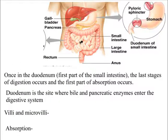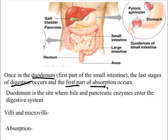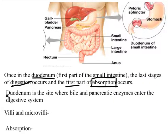The small intestine is made up of small tubes. It's broken into three parts. The first part is called the duodenum. The last stages of digestion — breaking things down — happen at the duodenum, but also the first absorption begins there. Remember, absorption is the major function: absorbing nutrients into our circulatory system and bloodstream.